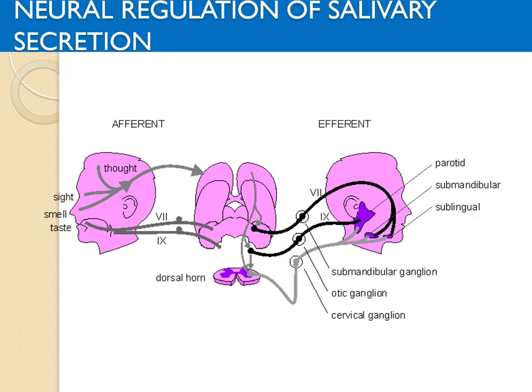Sympathetic stimulation causes vasoconstriction in the salivary glands and transient secretion of a very small amount of thick viscid saliva rich in mucus and other organic contents. The receptors in the acinar and ductal cells are beta-adrenergic and the second messenger is cyclic AMP. This is how both sympathetic and parasympathetic increase salivary secretion.